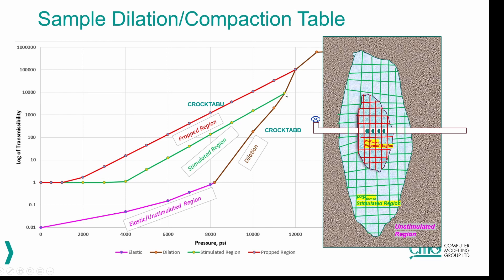If you are between the green dot and the red line — anywhere in the green region a little bit further away from the perforations — then the pressure will come down the brown line, go out to the green one, and follow that as the pressure declines. And if the pressure does not reach this point, the transmissibility will just come down the same dilation path and then go into the elastic region.